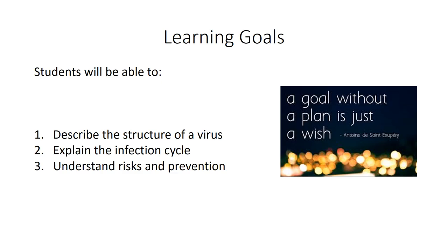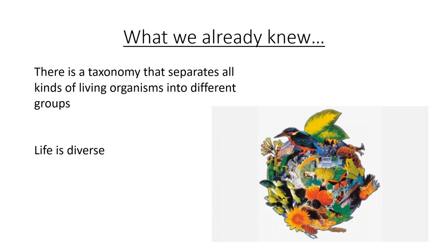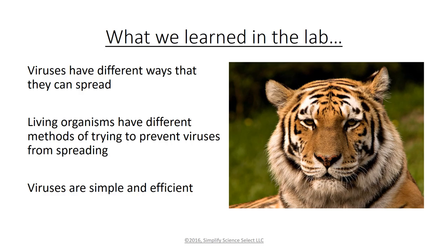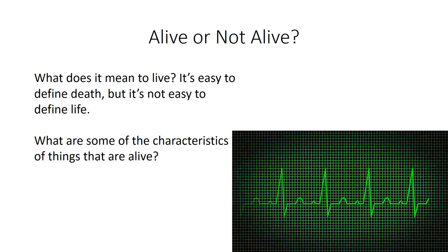Our learning goals: to describe the structure of a virus, explain the infection cycle, and understand risks and prevention. What we already know is that there is a taxonomy that separates all kinds of living organisms into different groups, and that life is diverse. What we learned in the lab is that viruses have different ways they can spread, living organisms have different methods of trying to prevent viruses from spreading, and viruses are simple and efficient.